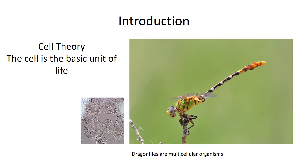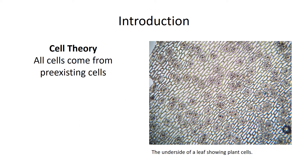These small cells here are actually mine — they're from my cheek. The second part of cell theory is that all cells come from pre-existing cells, or at least in today's world they do. At one point, when cells emerged from geological processes over 3.8 billion years ago, the first cells didn't come from pre-existing cells, but ever since life got started, they have.